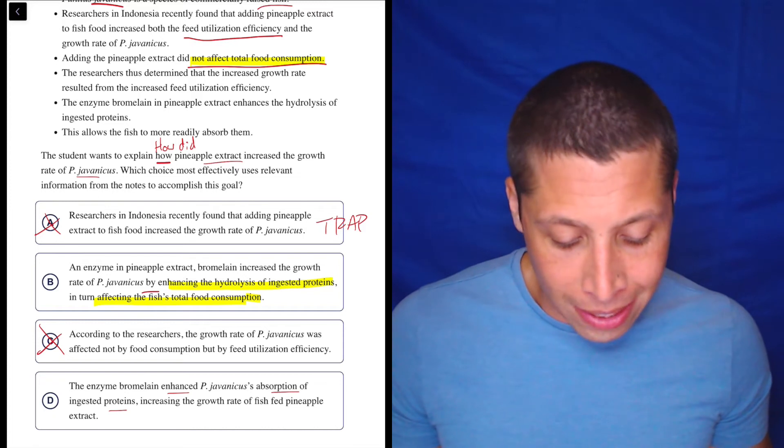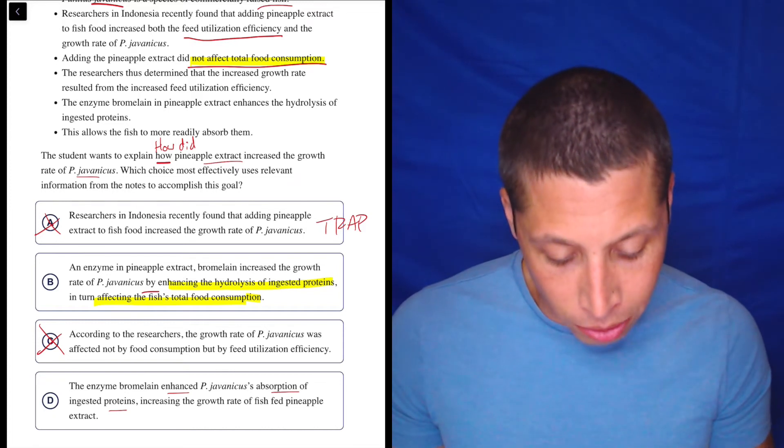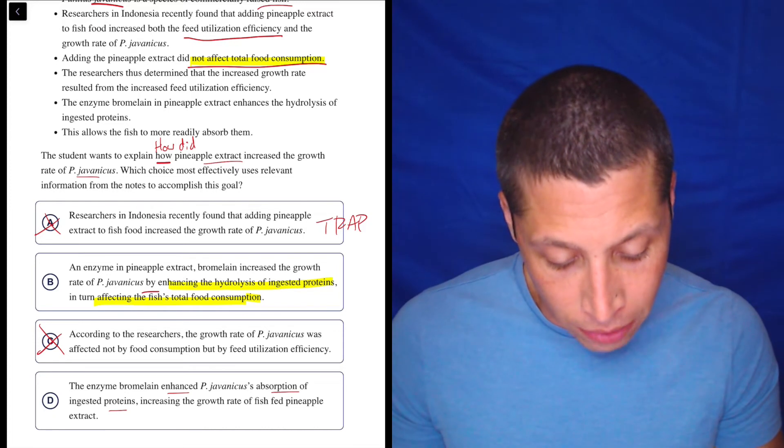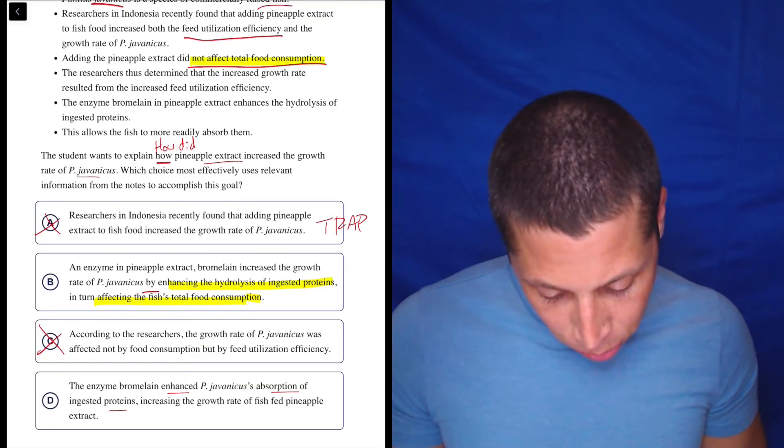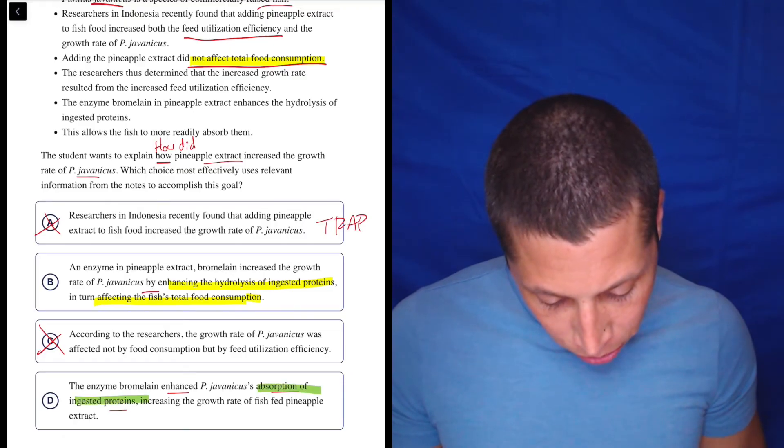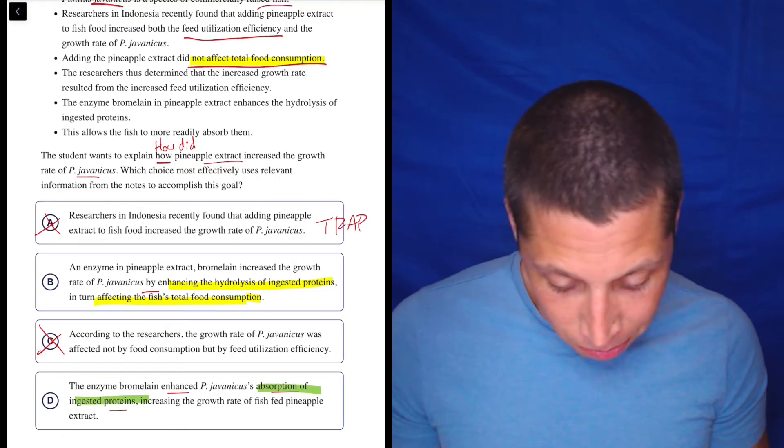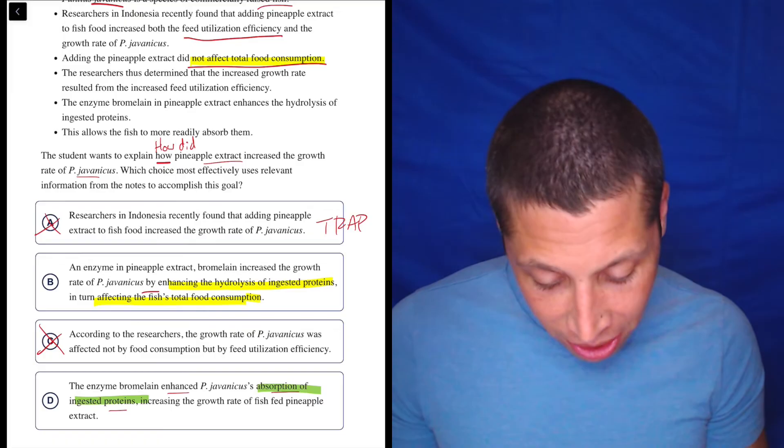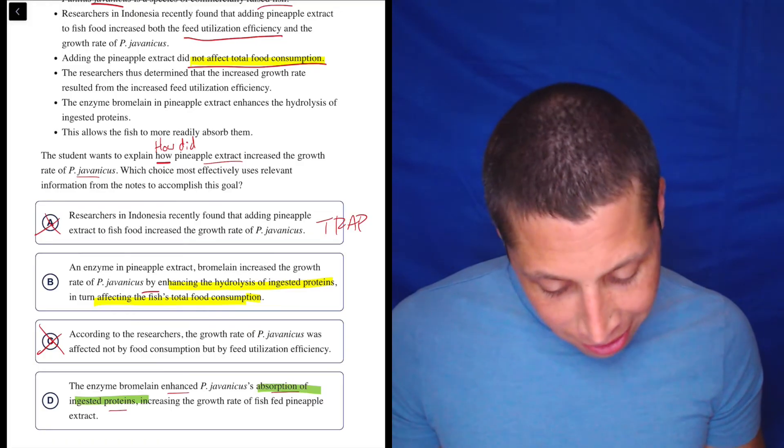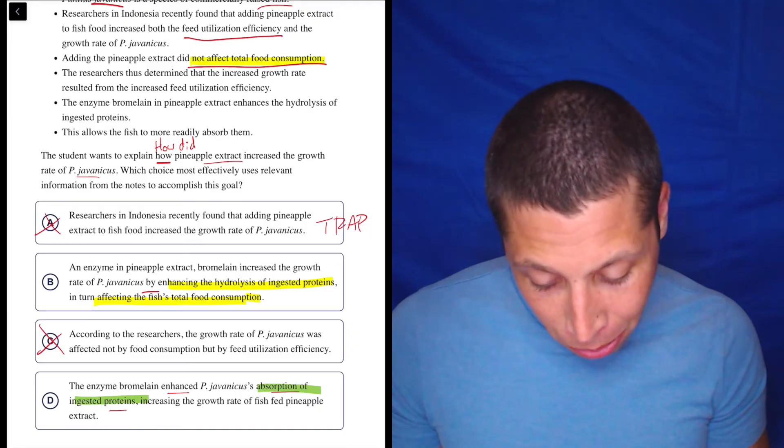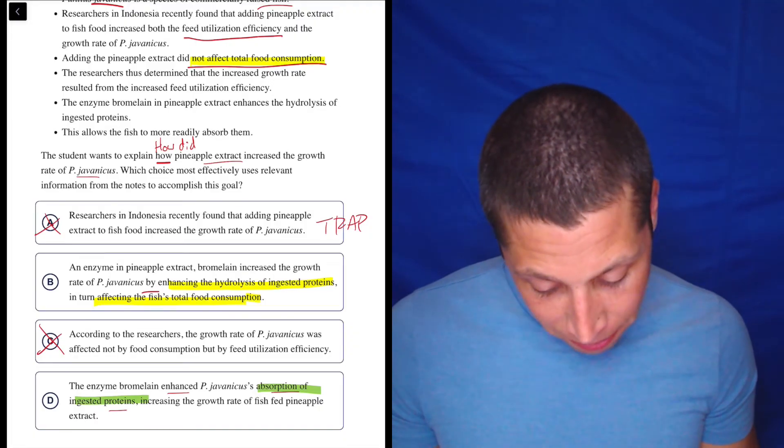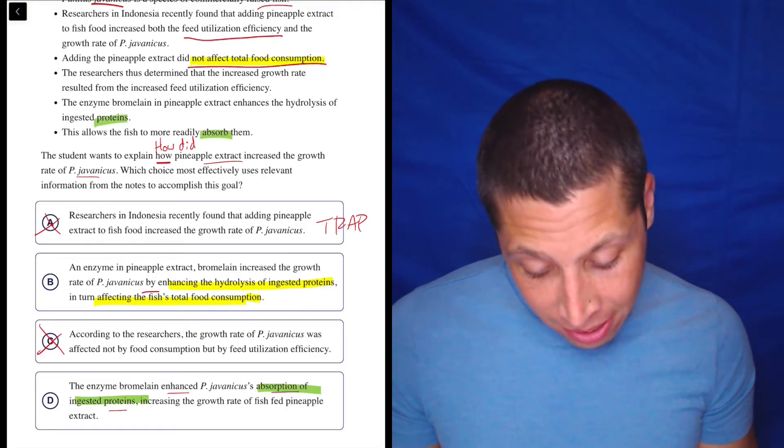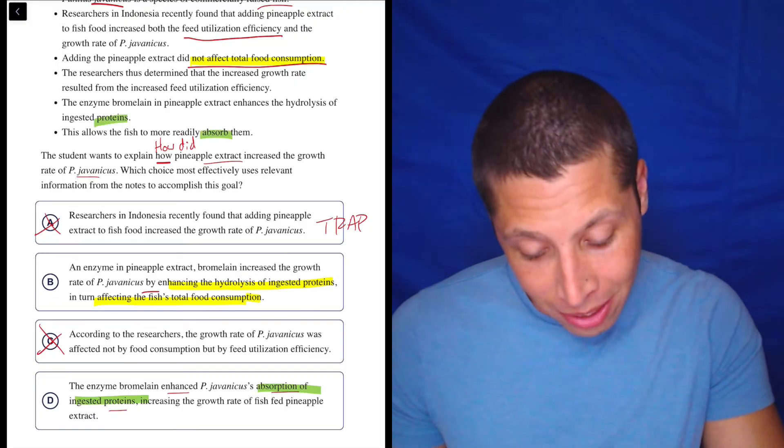So let's keep reading. The researchers thus determined that the increased growth rate resulted from the increased feed utilization efficiency. Okay. Well, what did they say in this one? The enzyme bromelain enhanced the absorption of ingested proteins. So maybe that's it. Let's keep going. The enzyme bromelain in pineapple extract enhances the hydrolysis of ingested proteins. Wow, they're really trying to trick us. This allows the fish to readily absorb them. Wow. Absorb the proteins. That's the connection. That's choice D.